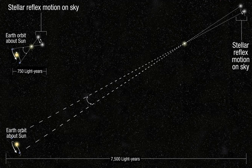Parallax arises due to change in viewpoint occurring due to motion of the observer, of the observed, or of both. What is essential is relative motion. By observing parallax, measuring angles, and using geometry, one can determine distance.